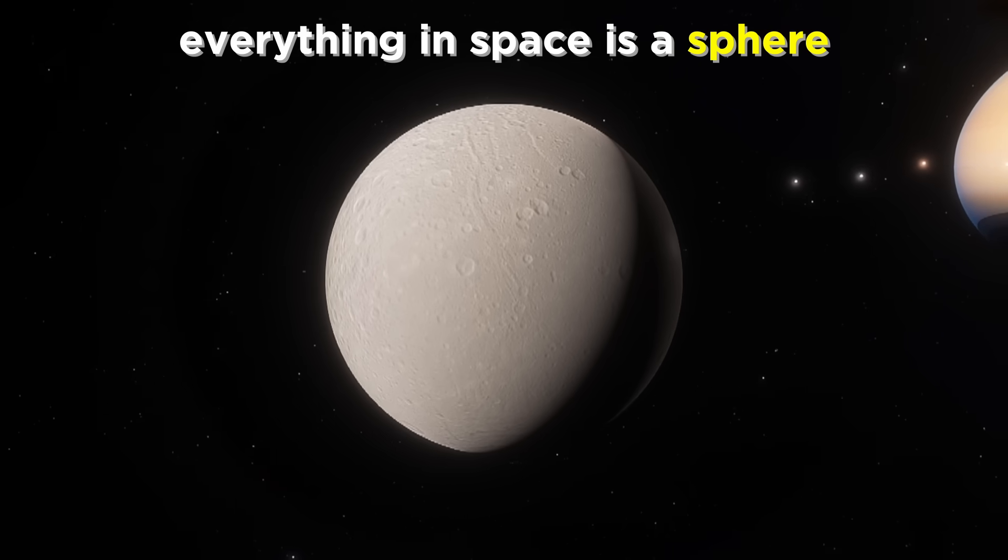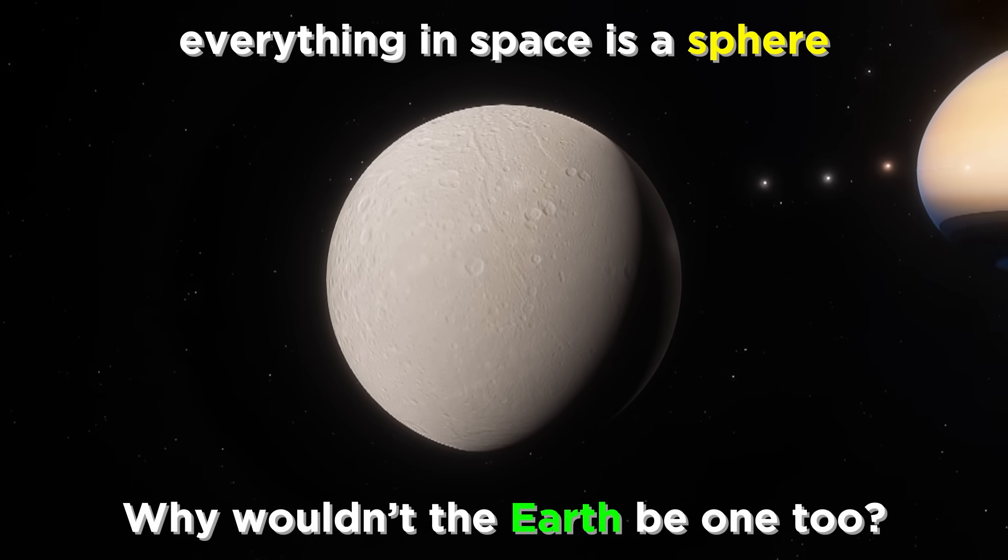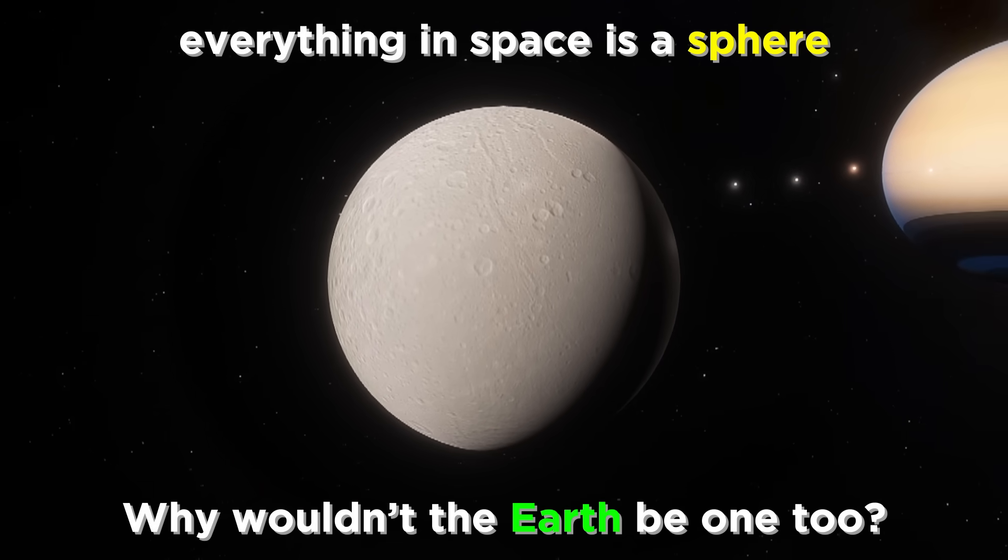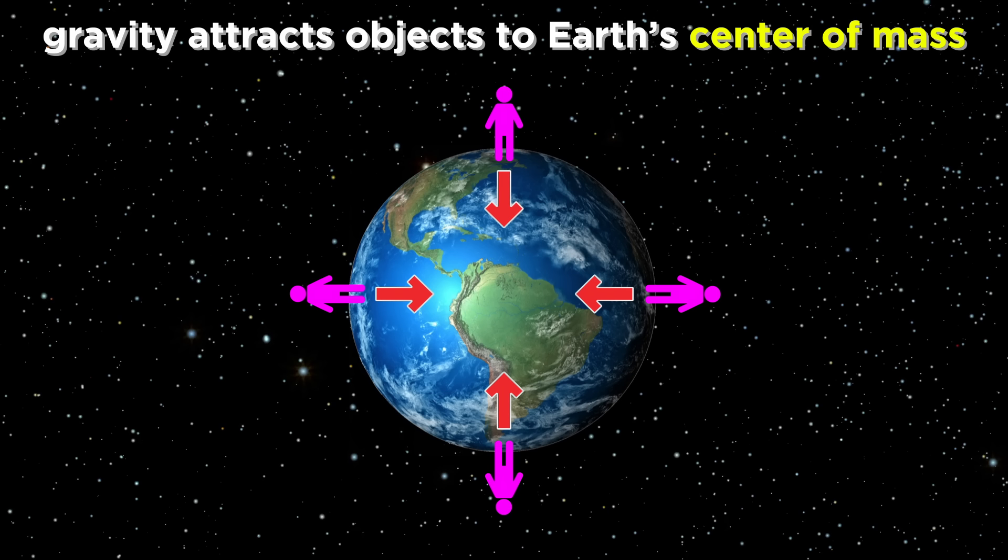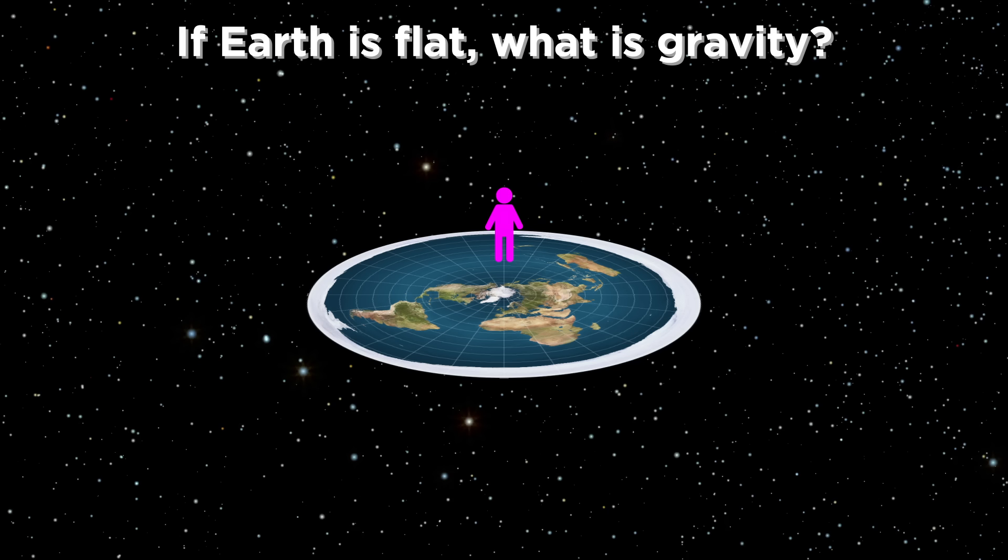Everything we see in space is a sphere. Why is earth the only thing that isn't? Things fall to the earth because of gravity, which attracts things to earth's center of mass. If earth is not a sphere, why do things fall to the earth? What is gravity? The implications run so much deeper than just what rotates around what.